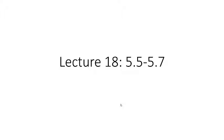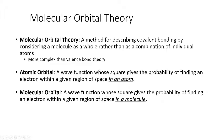Today's lecture is on chapter 5.5 to 5.7 on molecular orbital theory. Molecular orbital theory is a method for describing covalent bonding by considering a molecule as a whole rather than a combination of individual atoms. This is more complex than valence bond theory, and is the alternative theory to hybridization.